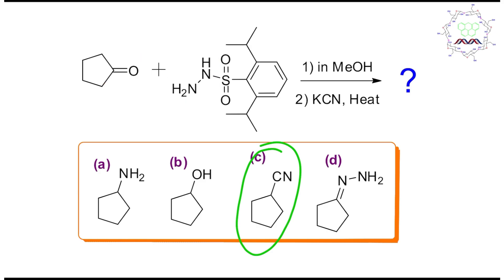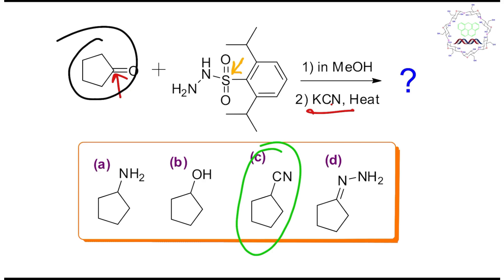First of all, you need to understand the first step reaction: this is hydrazine and carbonyl — a simple Schiff base reaction with water elimination. I strongly suggest you draw the structure of that product. After that, you can see there is KCN, so you can understand that KCN can only attack this imine carbon, not the sulfur because it's protected. So there will be a cyanide — a carbon-carbon bond here.